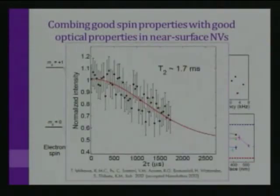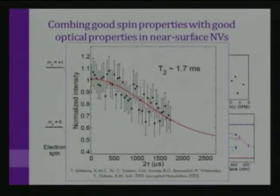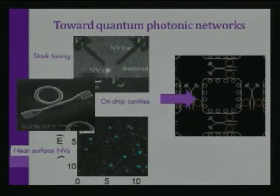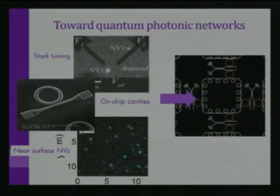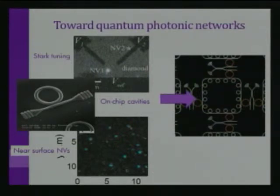In conclusion, I've shown work done at HP and continuing here at the University of Washington towards building an integrated quantum network. The key components are: first, the ability to tune the properties of NV centers, which we can do using Stark tuning; second, integrating them into photonic devices — we've begun by showing coupling into single cavities; and finally, working with NV centers that have good properties located very near to the sample surface to achieve a scalable quantum information network.